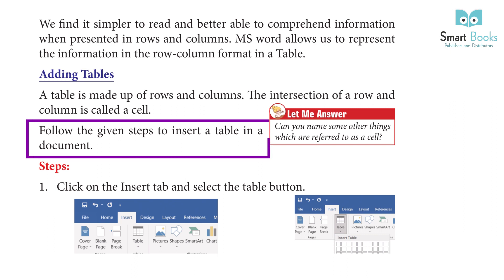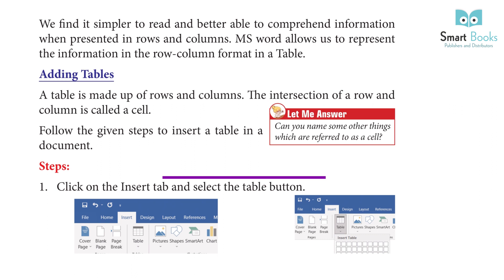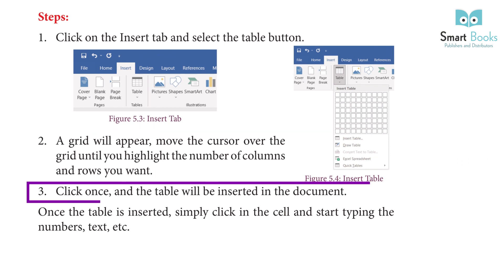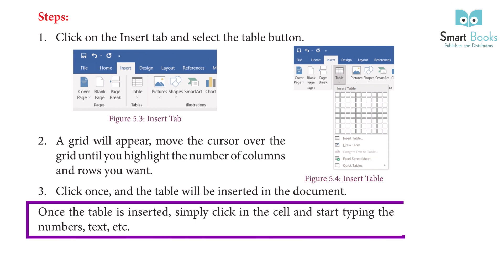Follow the given steps to insert a table in a document. Step 1: Click on the Insert tab and select the Table button. Step 2: A grid will appear — move the cursor over the grid until you highlight the number of columns and rows you want. Step 3: Click once and the table will be inserted in the document. Once the table is inserted, simply click in the cell and start typing numbers, text, etc.